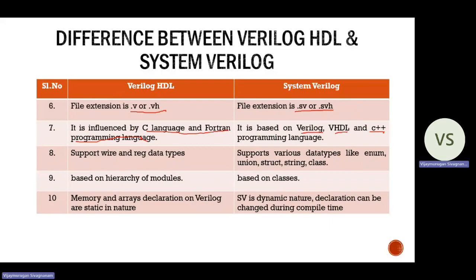The eighth point is data types. In Verilog HDL, there are two types of data: wire and register. SystemVerilog supports various data types such as union, struct, string, and class.